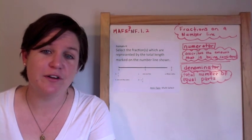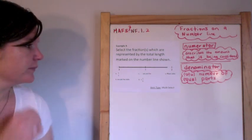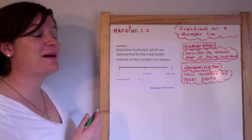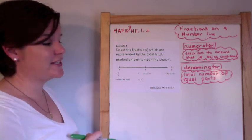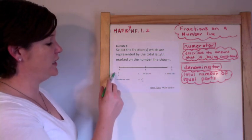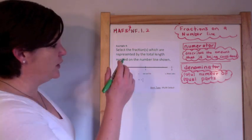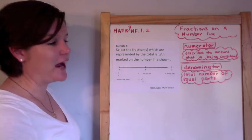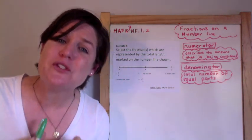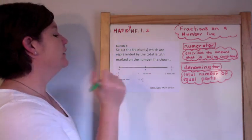Example 4. Select the fractions which are represented by the total length marked on the number line shown. This is a multi-select question so it could be A, B, C, D, or E. It could be more than one answer. This is a fraction greater than one. It's a little scary. This is where kids stumble so make sure you pay attention.